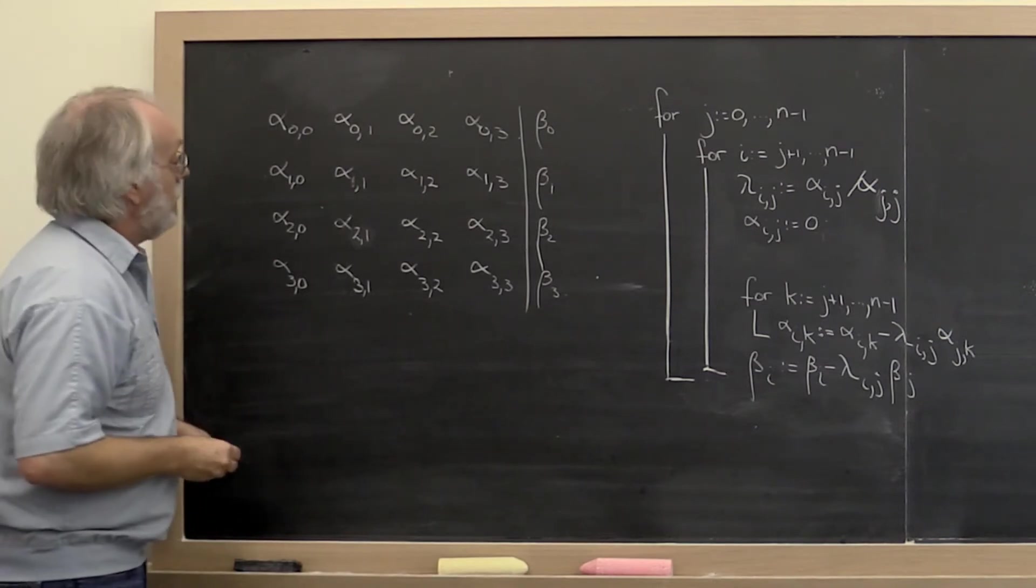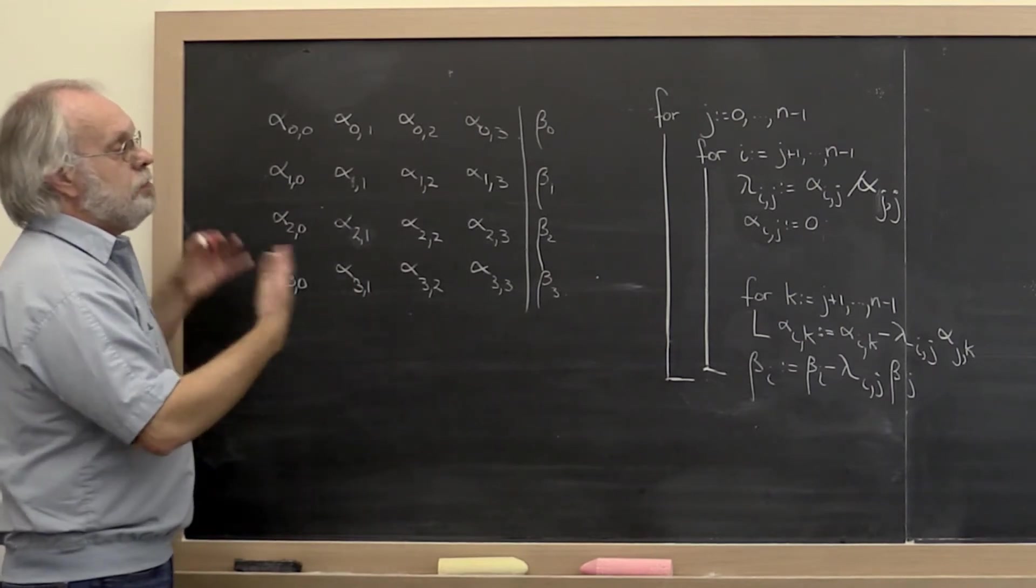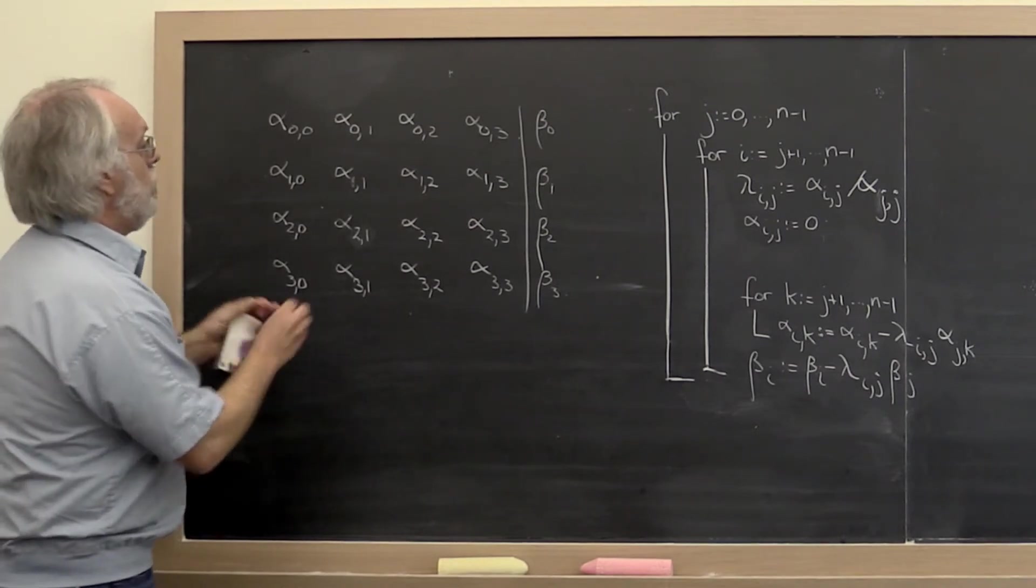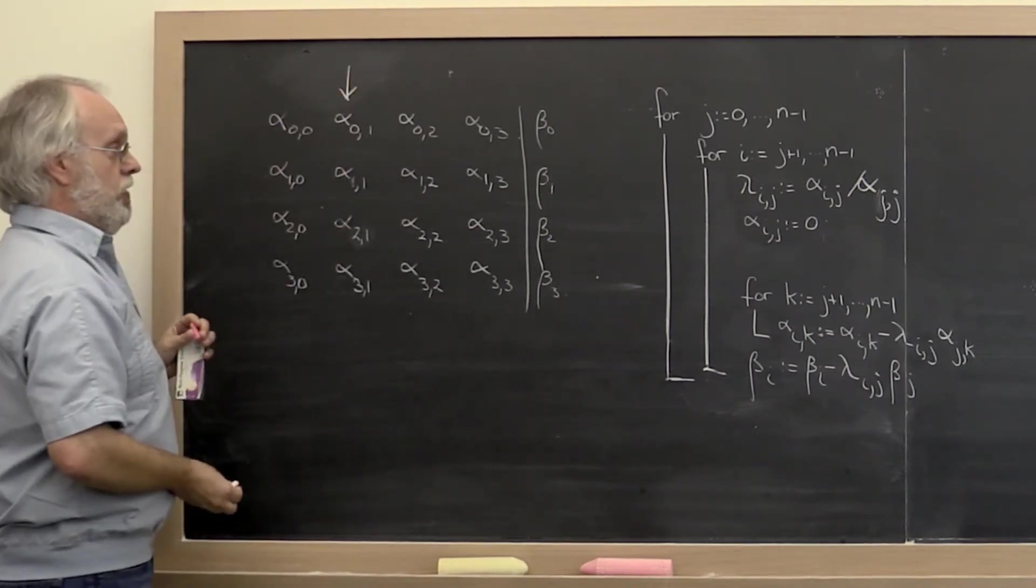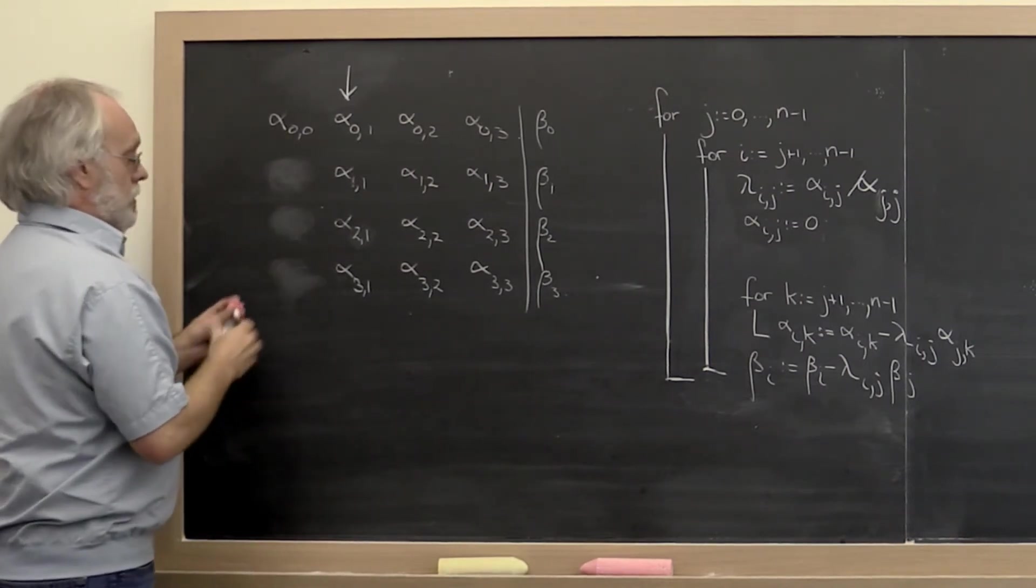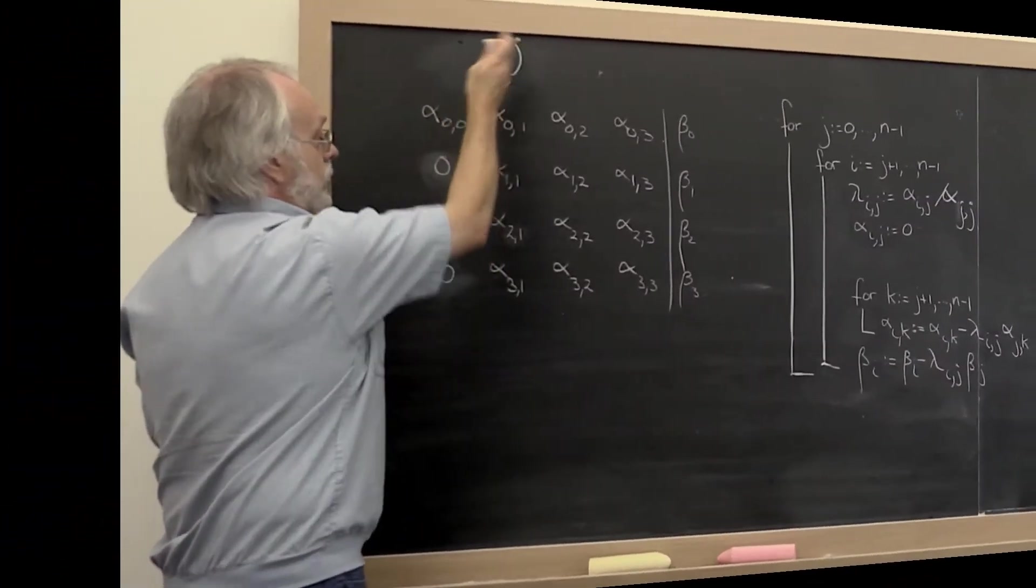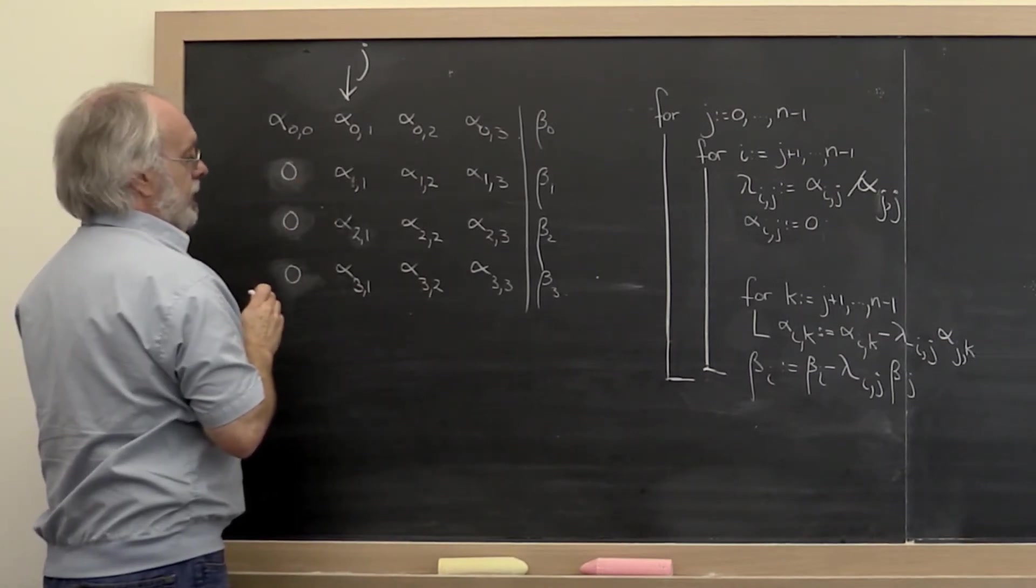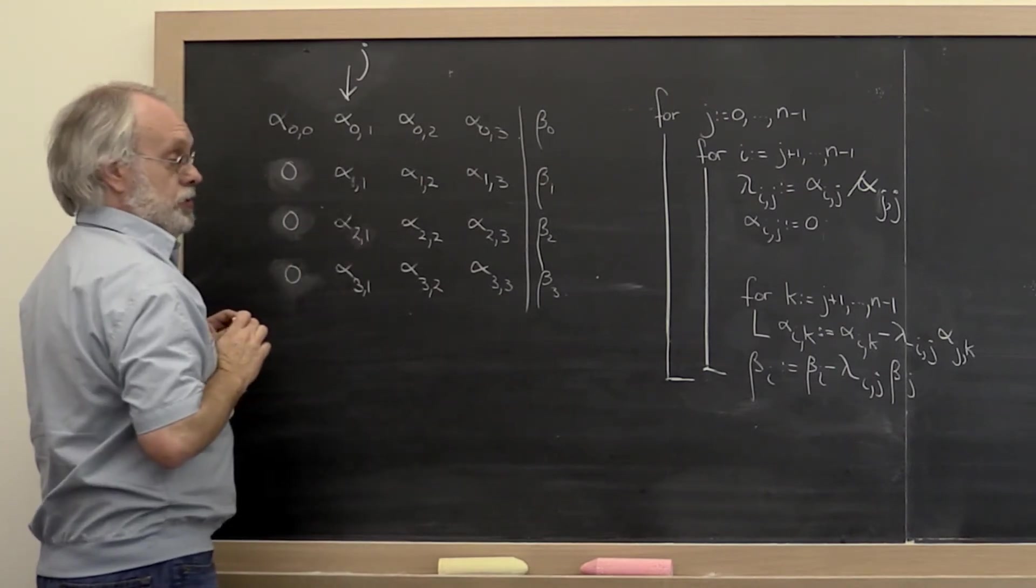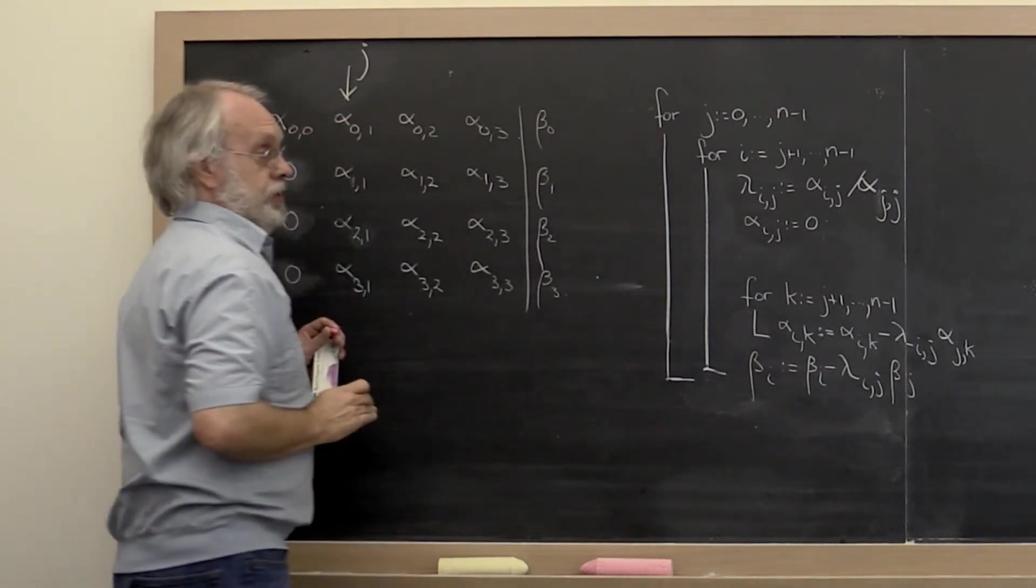To discuss an algorithm, what I like to do is say what's a typical state in which we find ourselves. A typical state may be that we are currently working with this column right here, and we have already introduced zeros to the left. This is the index J which keeps track of which column is the current column. Notice that that's our outer loop here indexed by J.